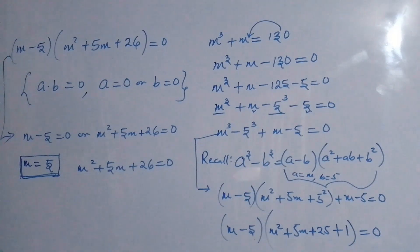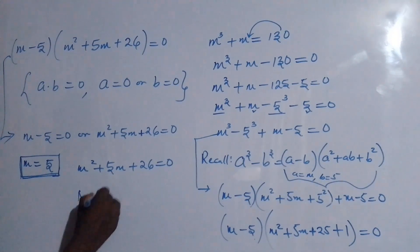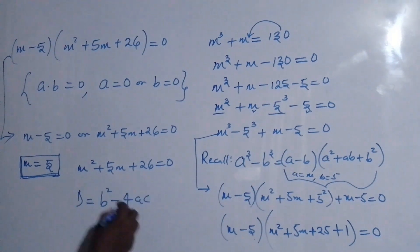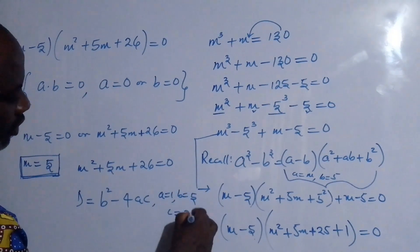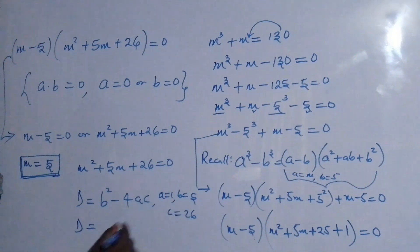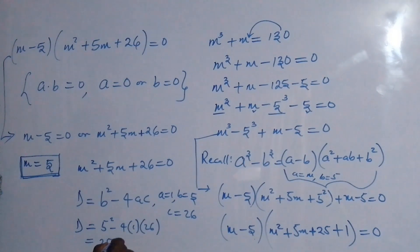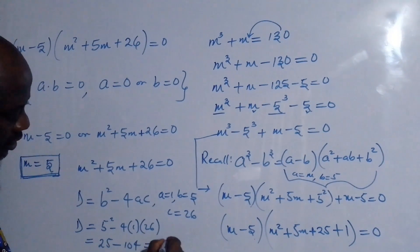The second solution would be m squared plus 5m plus 26 equal to 0. Let's see if this can be factored by finding the discriminant, where d equals b squared minus 4ac. Here a equals 1, b equals 5, and c equals 26. So d equals 5 squared minus 4 times 1 times 26, which is 25 minus 104, giving d equals minus 79.